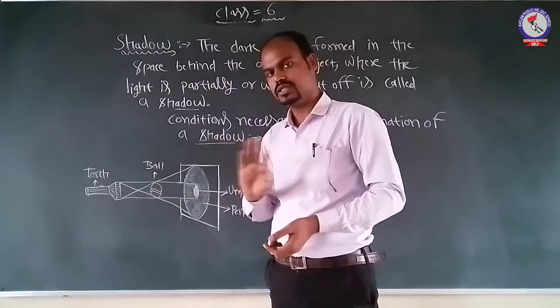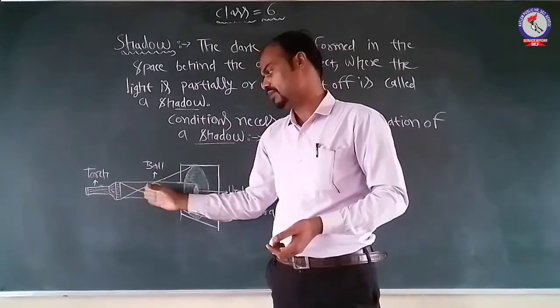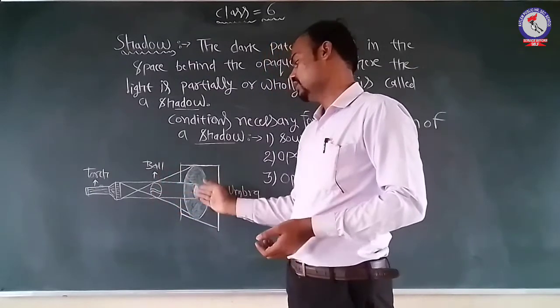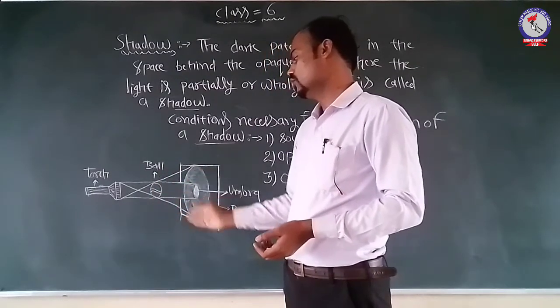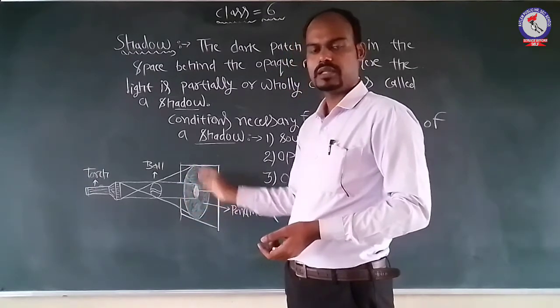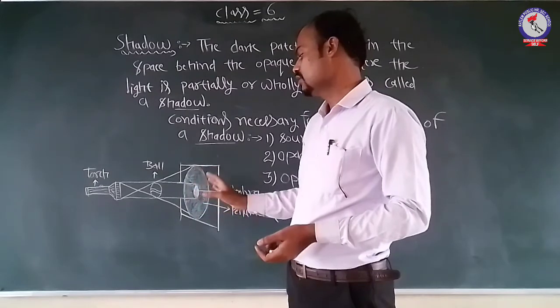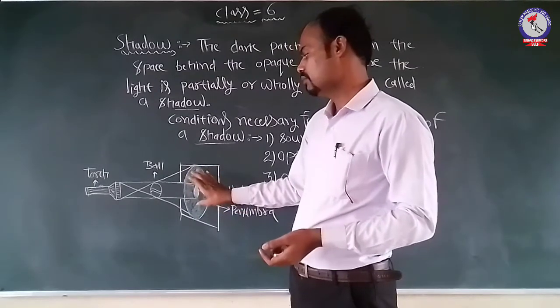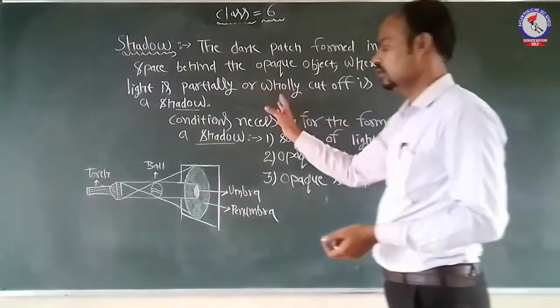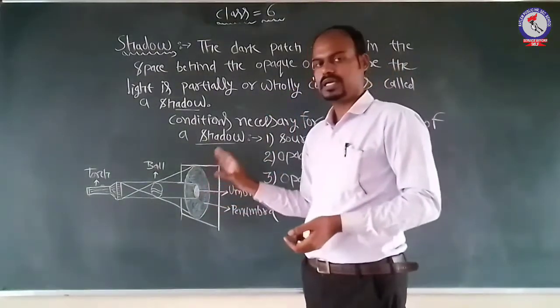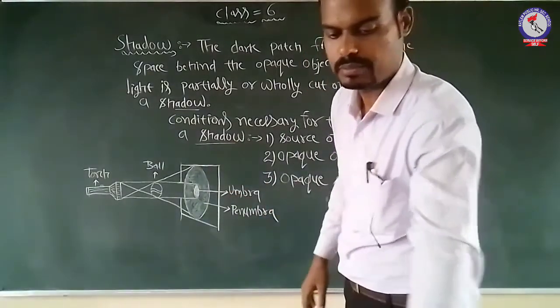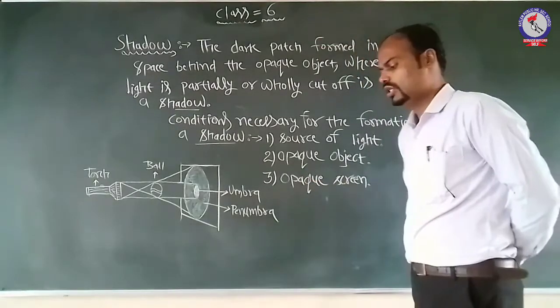In this opaque object, light cannot pass through. Behind the opaque object, a dark region will be formed. If there is light, in some areas the light will be present, but in some areas the light will not be present, creating the shadow.